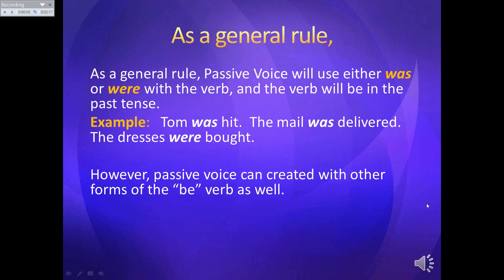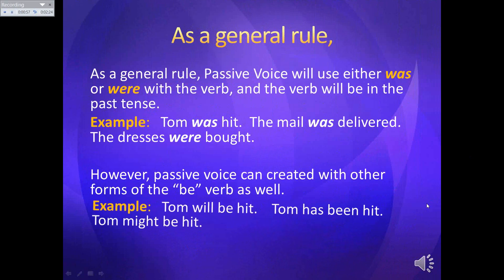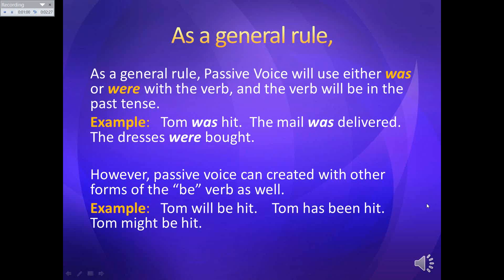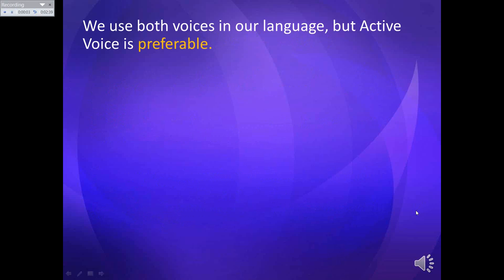We know that was and were are forms of the be verb, so any form of the be verb would work for passive voice. I could say: Tom will be hit. He has been hit. He might be hit. I don't have to say was and were, but most of the time that's what you see on your papers. We use both voices in our language, but active is preferable — it's even preferable on your computer. If you turn on grammar review, when you write something in passive voice, your computer will want you to rewrite it in active voice.